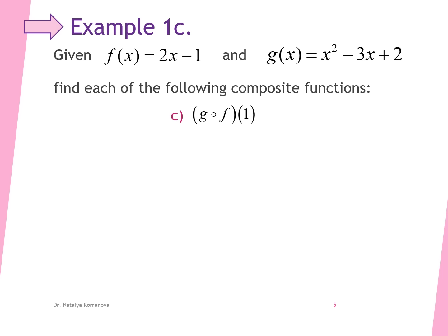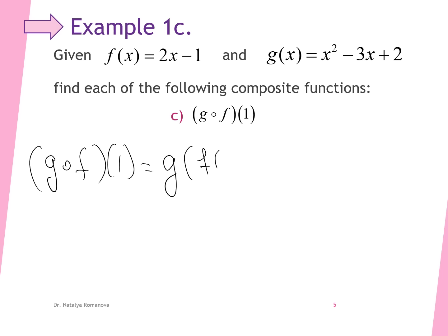Next example: we have to find the composition of function g and f of x at x equals 1, written as g of f of 1. Our inner function is f of 1 — the value of function f at x equals 1. That gives us 2 times 1 minus 1, which equals 1.